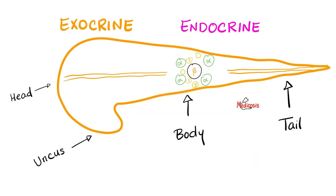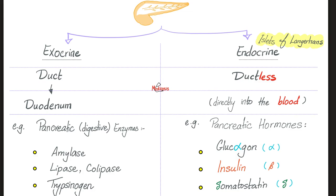Anatomically, your pancreas has a head, a body, and a tail. Near the head, there is a lovely uncinate process, or uncus. Functionally, your pancreas has exocrine glands and endocrine glands. The endocrine glands tend to be more abundant near the body and the tail of the pancreas, whereas the exocrine glands are more abundant around the head. Exocrine glands have ducts; endocrine glands do not. When the exocrine glands of the pancreas put their secretions into the ducts, these secretions eventually end up in the small intestine, particularly the duodenum.